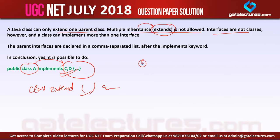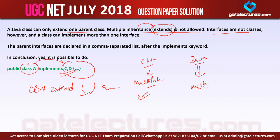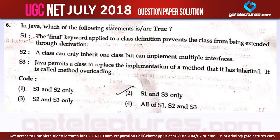The basic difference between C++ and Java here is that in C++, multiple inheritance is possible. But in Java, multiple inheritance is not possible. In Java, multiple interface implementations are possible. So option number 2 was saying a class can only inherit one class but can implement multiple interfaces — so option number 2 is also true.